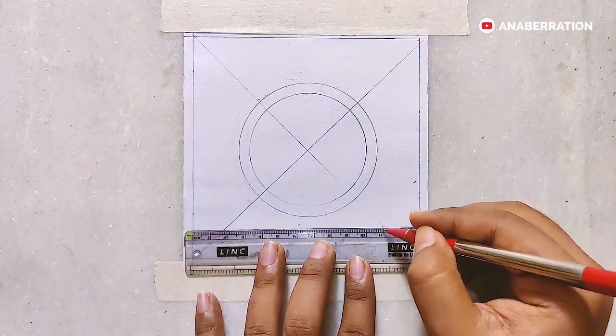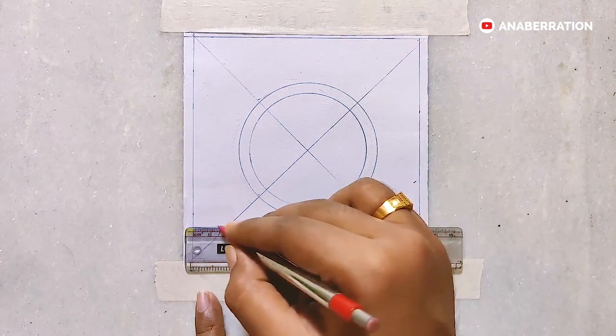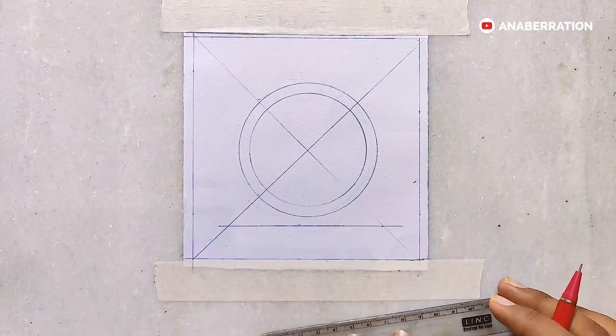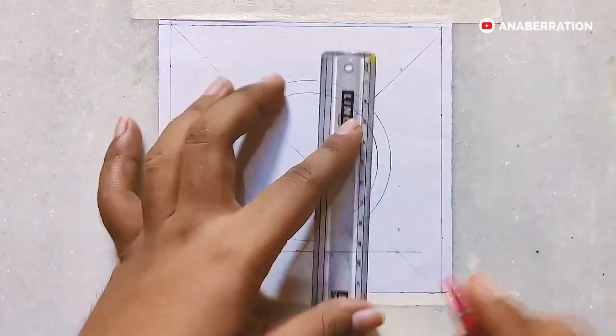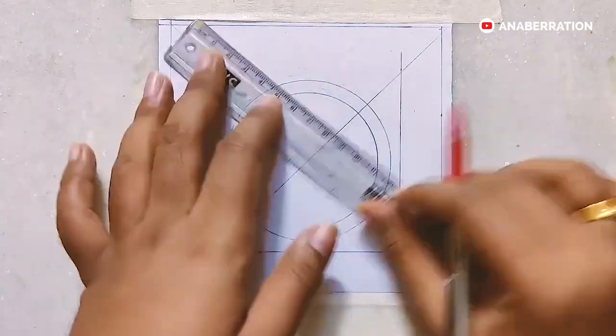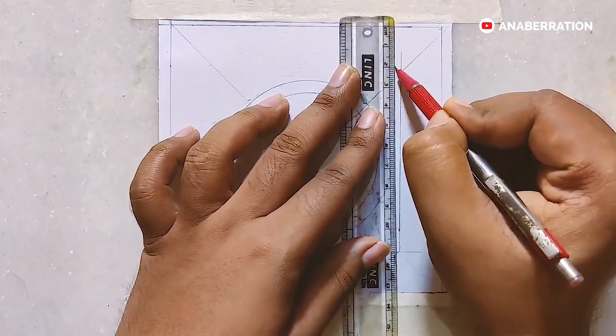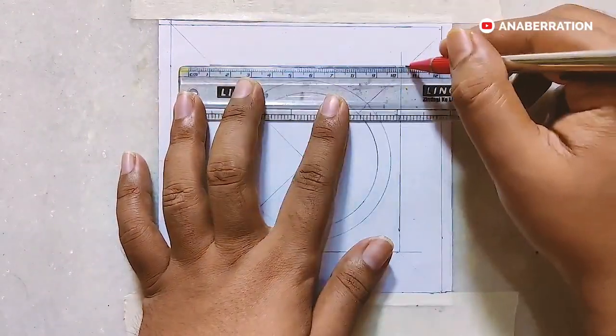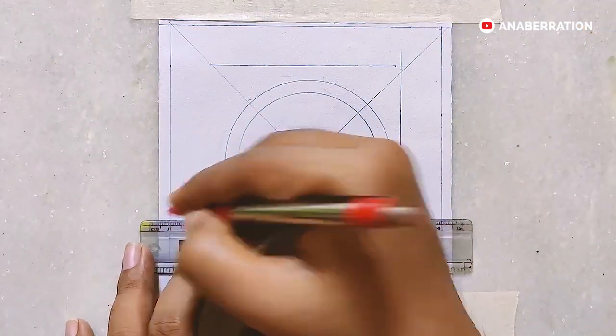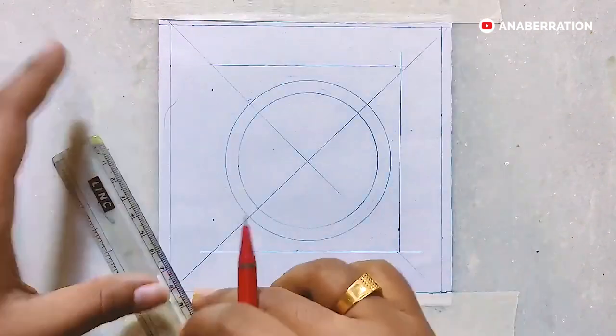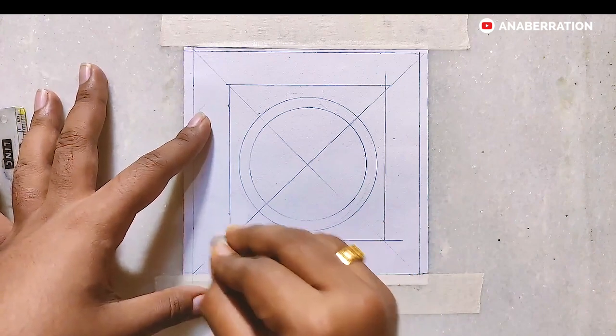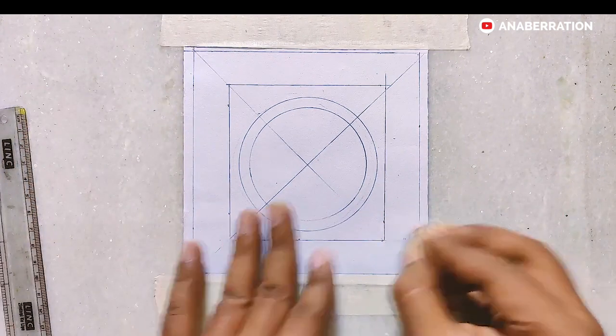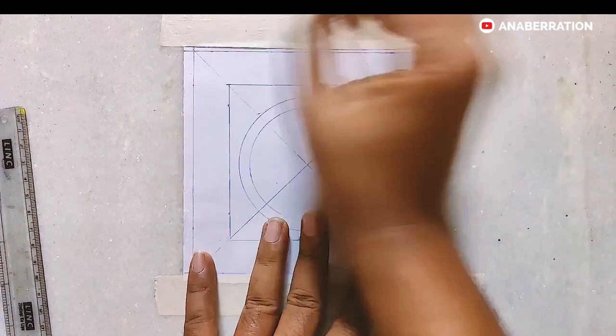Now with the help of a pencil and a scale I am adding a two centimeter thick border around the circle. Our border is done. Now I am just removing the excess amount of pencil lines with the help of an eraser.